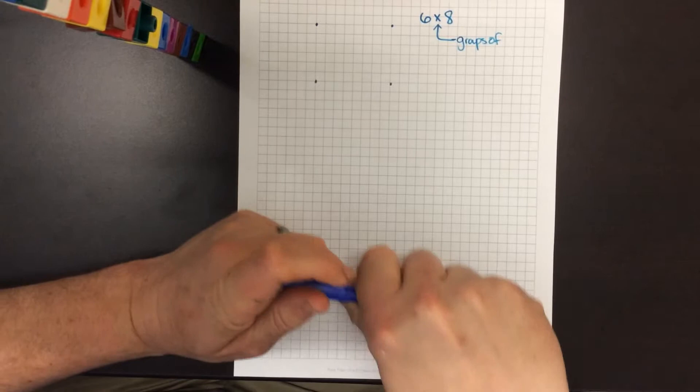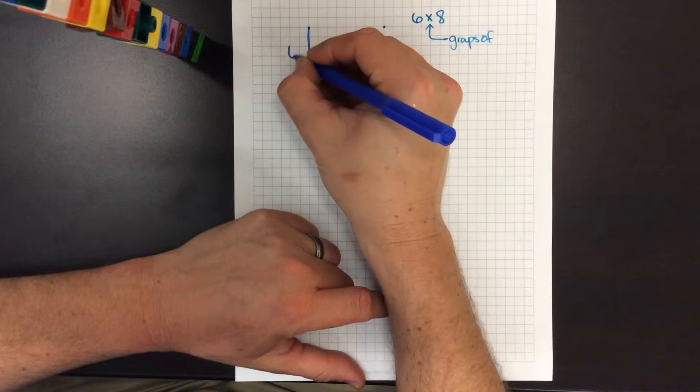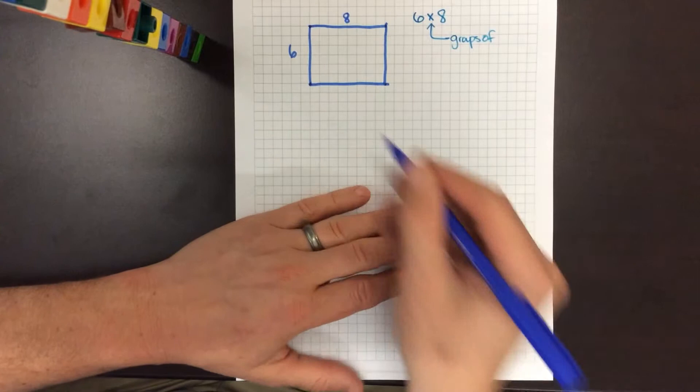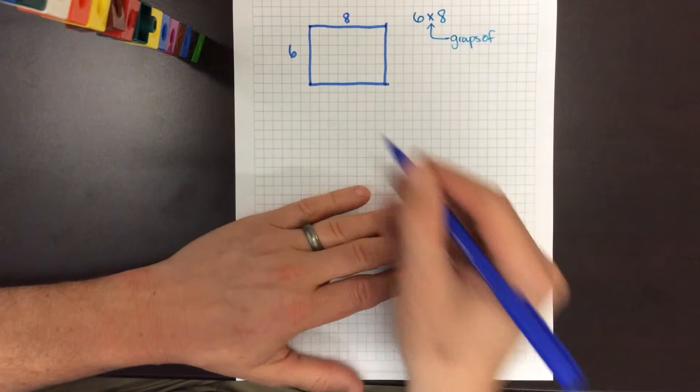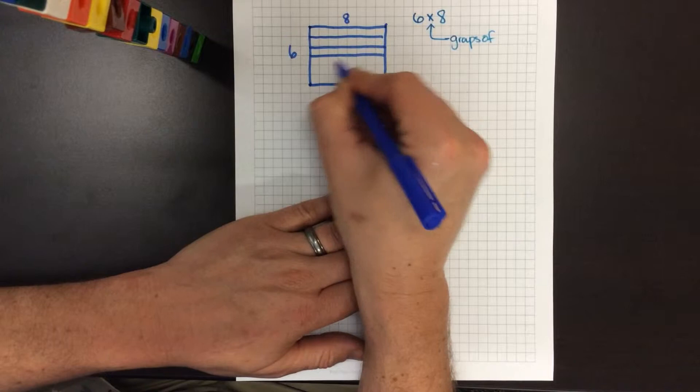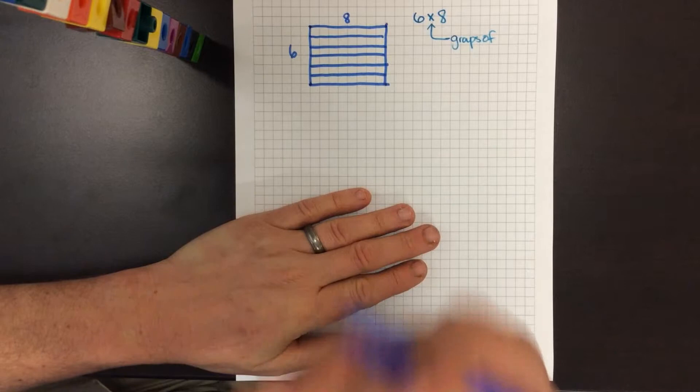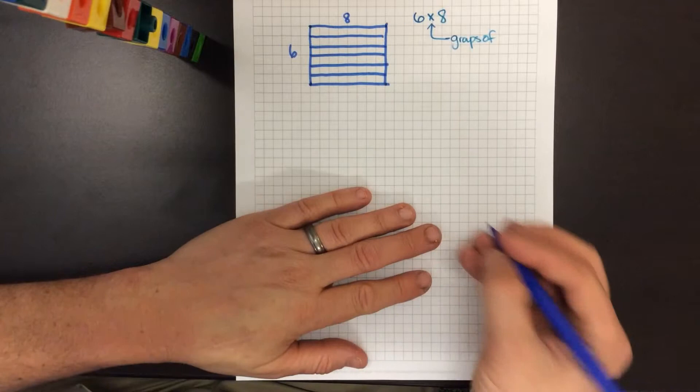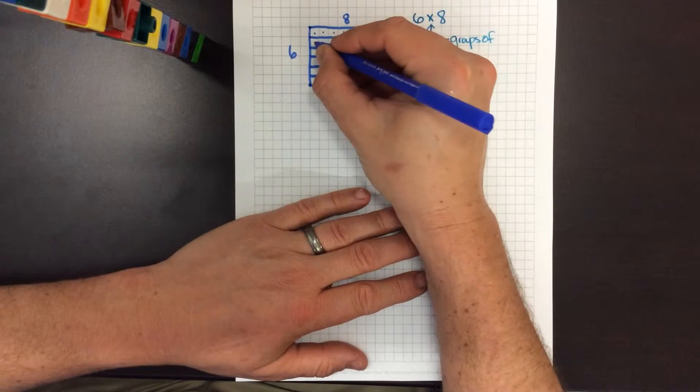So what we think about is we would have six groups of eight, and we would use base ten blocks or grid paper just like I'm doing now to create rectangular arrays. Now kids could start counting each one of these individual units, but they would realize after a while that's not really efficient, so they would think of ways to group these groups of eight to make it a little bit easier.